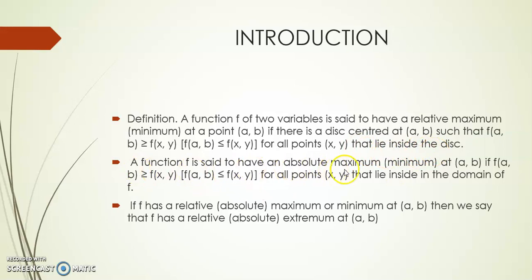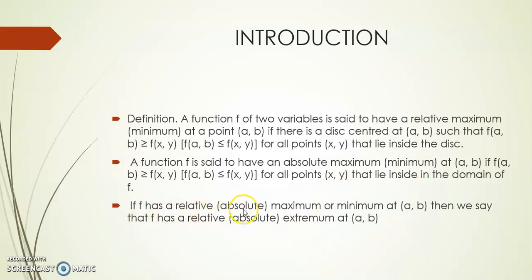A function is said to have an absolute maximum or minimum at (a,b) if f(a,b) is greater than or equal to f(x,y), or f(a,b) is less than or equal to f(x,y), for all points (x,y) that lie in the domain of f. Then we say that f has a relative or absolute extremum at (a,b).